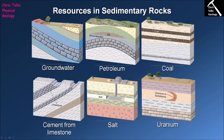The final resource is uranium. Looking at this diagram, we have what's referred to as a roll front uranium deposit. This tan-coloured porous sedimentary layer acts as an aquifer, with groundwater moving through it containing small amounts of dissolved uranium as uranium 6+. As this water moves along the aquifer, it reaches a redox boundary — a change from an oxygen-rich to an oxygen-poor environment — which reduces the uranium from U6+, which is soluble, to U4+, which is insoluble.